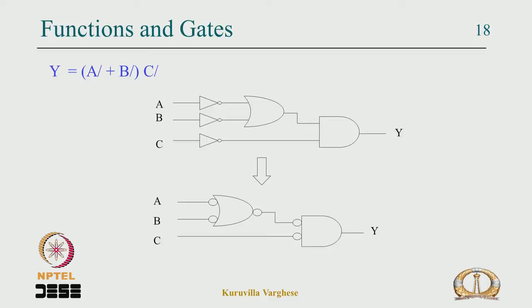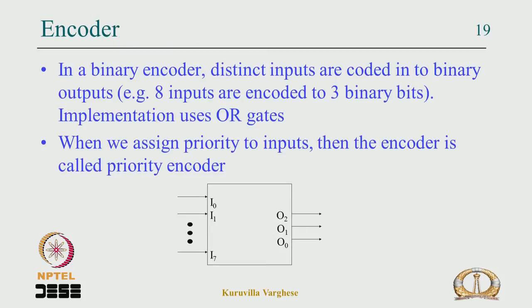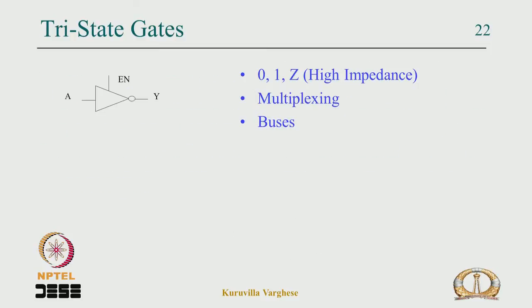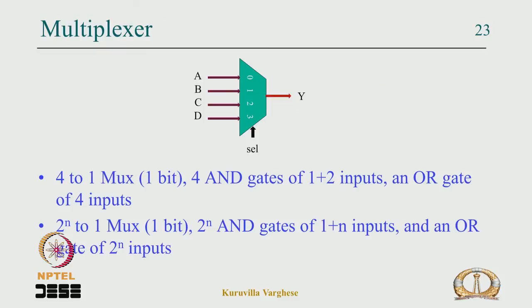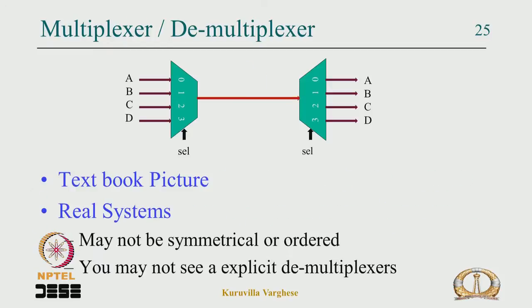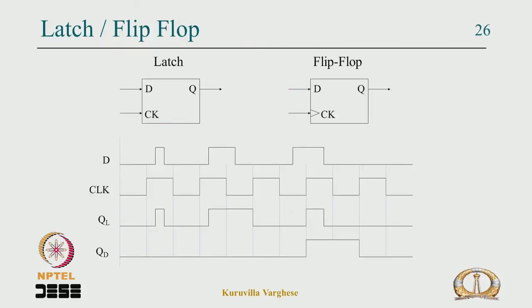We also saw how advantageous it is to think conceptually in that way — you will not waste gates when designing simple logic circuits. We looked at the encoder, decoder, multiplexers, tri-state gates, and what a tri-state gate is. Care is needed when busing or multiplexing using tri-state gates — you have to pull up or pull down. We also covered the multiplexer and demultiplexer in real-life contexts.